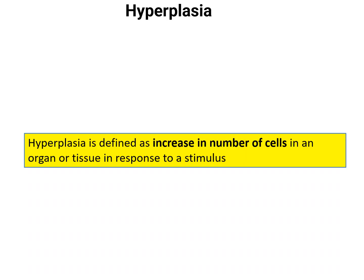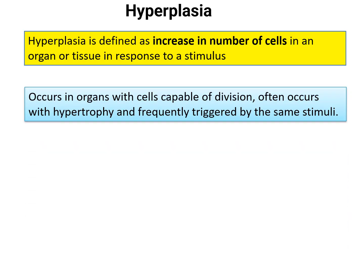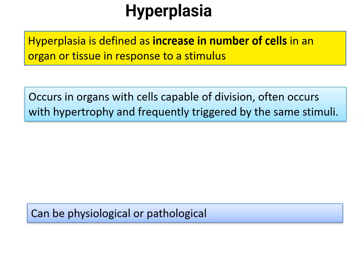Hyperplasia — 'hyper' means increase, 'plasia' is increase in number. Hyperplasia is defined as an increase in the number of cells in an organ or tissue in response to a stimulus. Hypertrophy occurs in cells not capable of division like cardiac and skeletal muscle, whereas hyperplasia occurs only in organs with the capacity for division. Cardiac and skeletal muscle undergo only hypertrophy, while smooth muscle undergoes both hypertrophy and hyperplasia.